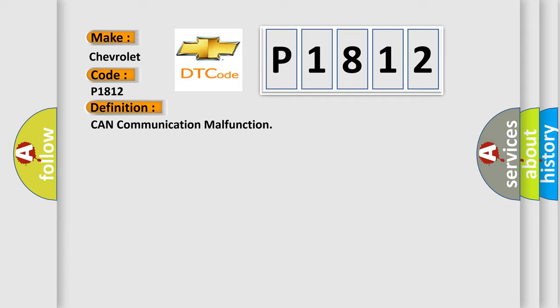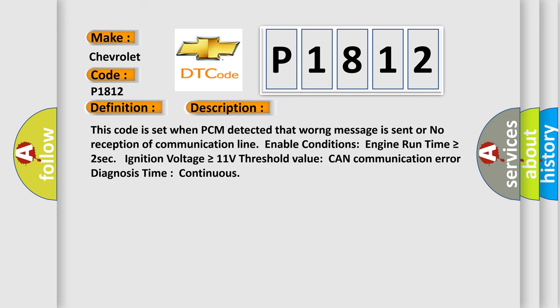The basic definition is CAN communication malfunction. This code is set when PCM detected that a warning message is sent or no reception of communication line. Enable conditions: engine run time is greater than or equal to 2 seconds, ignition voltage is greater than or equal to 11 volts. Threshold value: CAN communication error diagnosis time continuous.